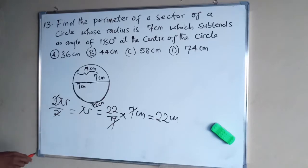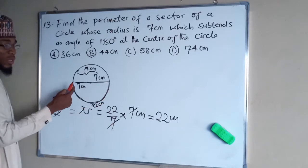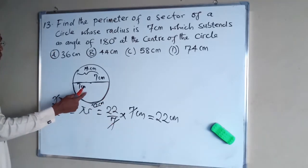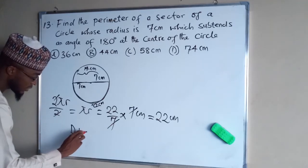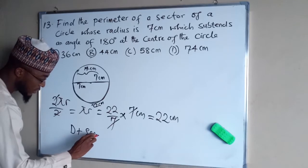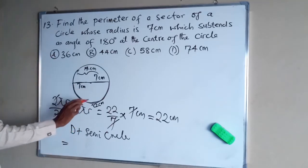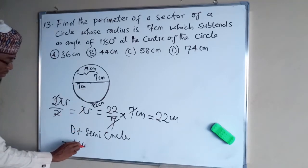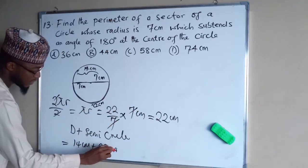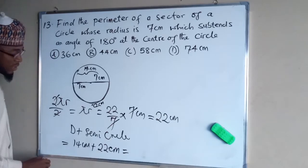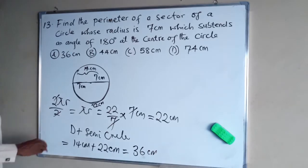When we are asked to find the perimeter, we add the diameter with the semicircle arc. The semicircle arc is 22 cm while the diameter is 14 cm. So diameter plus semicircle: 14 cm plus 22 cm equals 36 cm, which is option A.